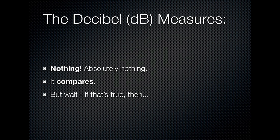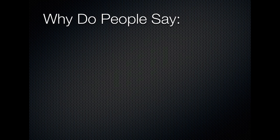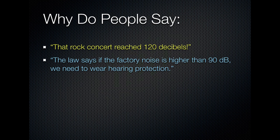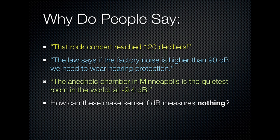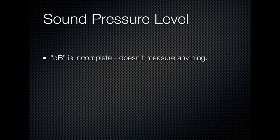Now this is the confusing part, because if it doesn't actually measure anything, then how come people say things like, 'That rock concert was so loud it reached 120 decibels,' or, 'The law in my city says that if factory noise is higher than 90 decibels, we have to wear hearing protection, and if it's higher than 110 decibels, we have to wear double hearing protection'? Or, 'The anechoic chamber in Minneapolis is the quietest room in the world at negative 9.4 dB ambient noise.' How do these make sense, and how can a room have a negative amount of sound? The missing piece is that the word decibel is incomplete — they're actually specifying a reference point without stating it.